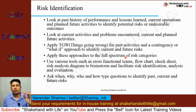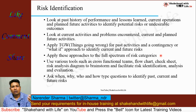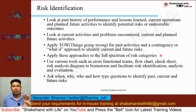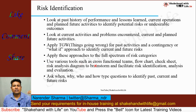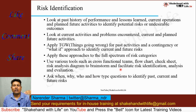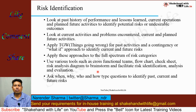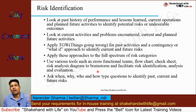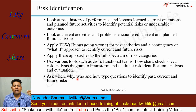Apply these approaches to the full spectrum of risk categories — operational, financial, strategic — applying the Things Going Wrong approach to each category. Use various tools such as cross-functional teams, flowcharts, check sheets, and risk analysis diagrams to brainstorm and facilitate risk identification, analysis, and evaluation. Ask when, why, who, and how type questions to identify past, current, and future risk.